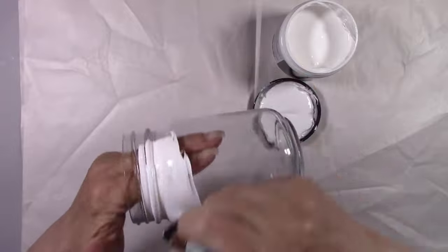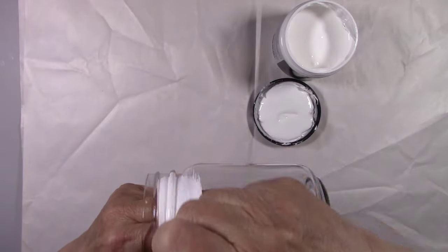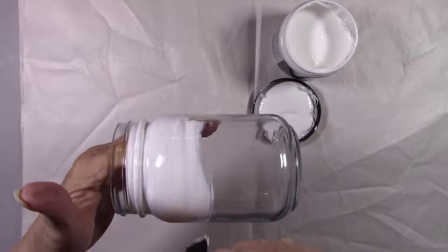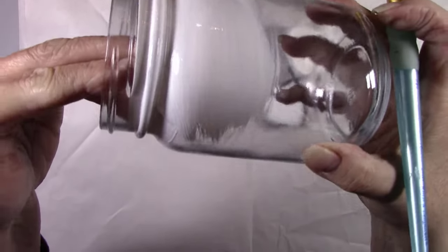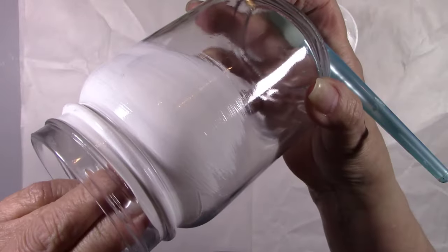I'm being very careful not to get any paint on the threads of this jar. I intend to add a soap dispenser lid, and if there is any paint on the threads, it won't screw on properly.